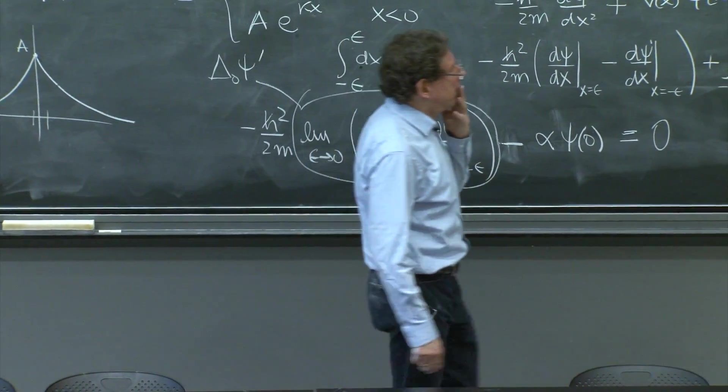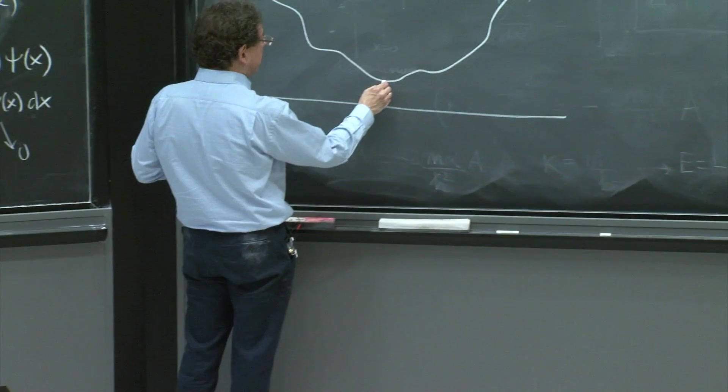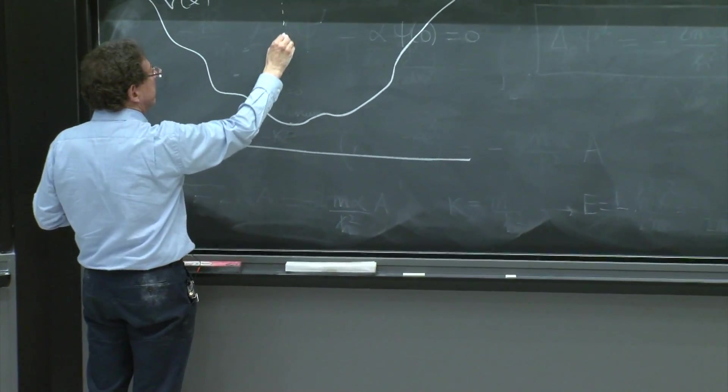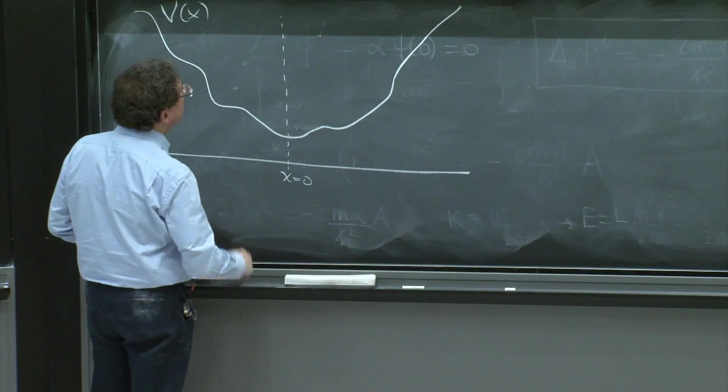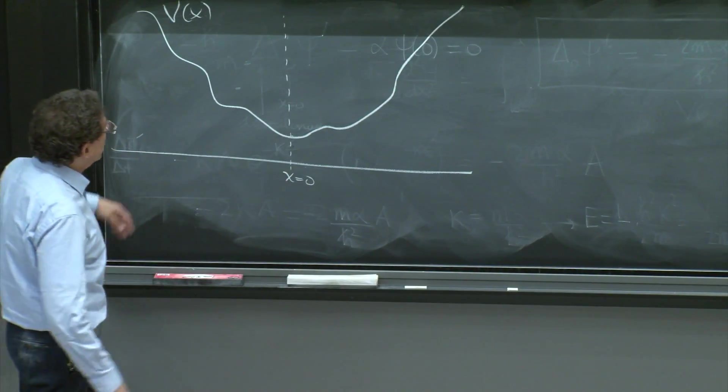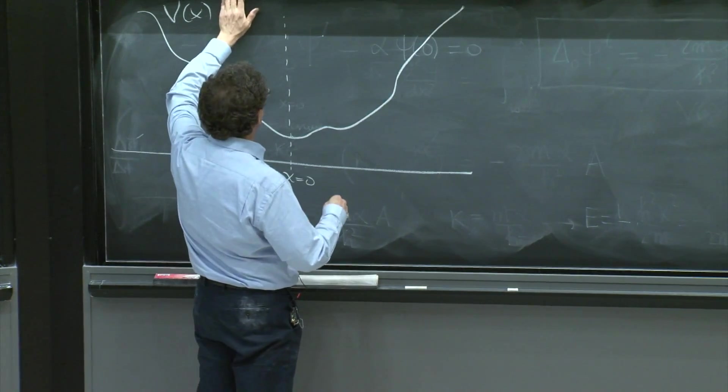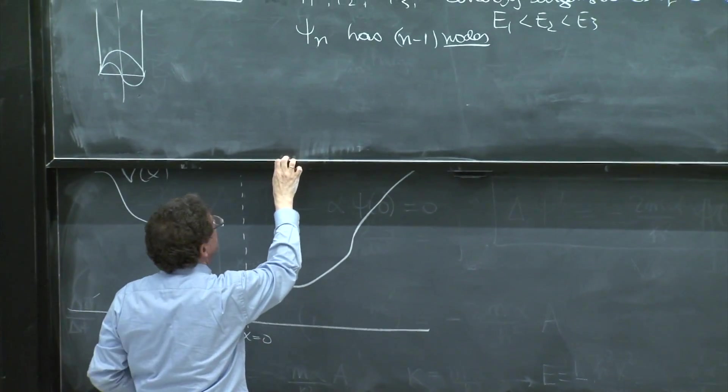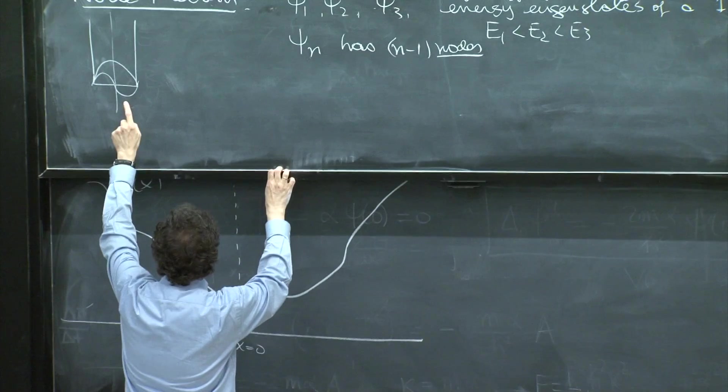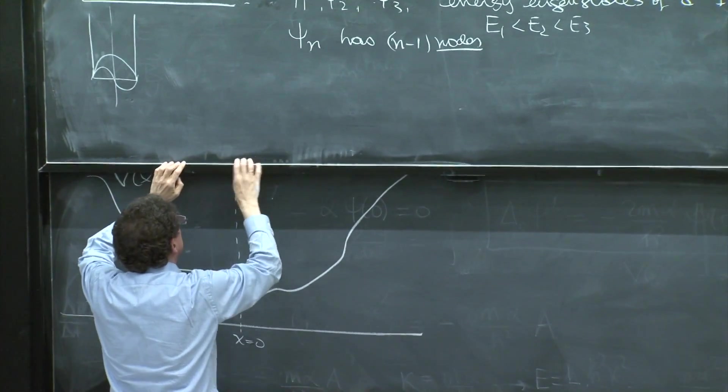Well, I would do the following. Here is the argument. Identify the minimum here. Call this x equals 0. Oh, I want to say one more thing. Remind you of another fact that I'm going to use.